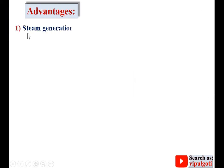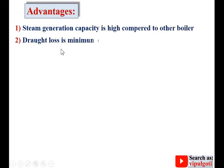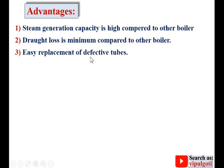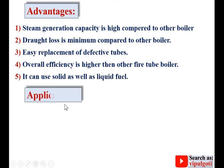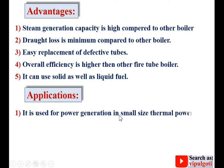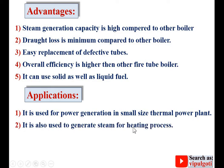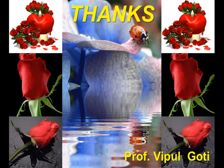Advantages: steam generation capacity is high compared to other boilers; draft loss is minimum compared to other boilers; easy replacement of defective tubes; overall efficiency is higher than other fire tube boilers; and it can use solid as well as liquid fuel. Applications of the Babcock-Wilcox boiler: it is used for power generation in small-size thermal power plants, and it is also used to generate steam for heating processes. Thanks, dear friends — please press the like button to appreciate this video.